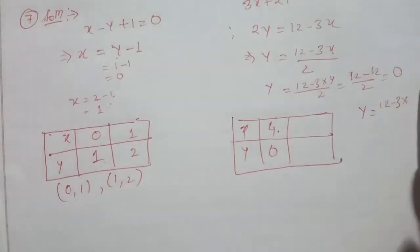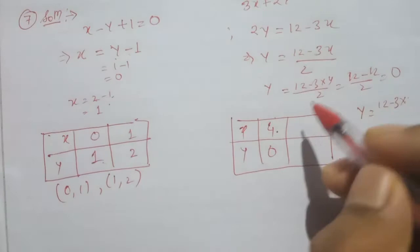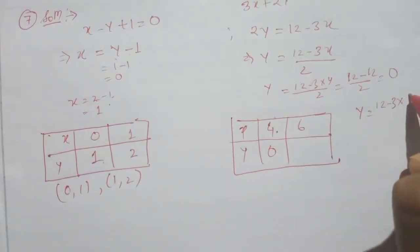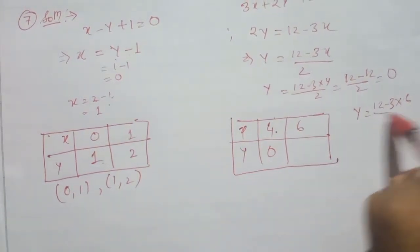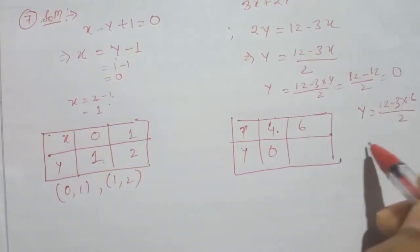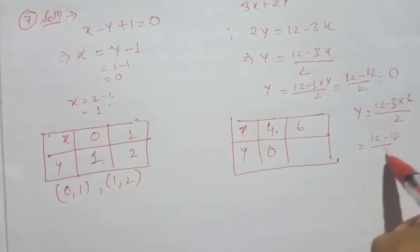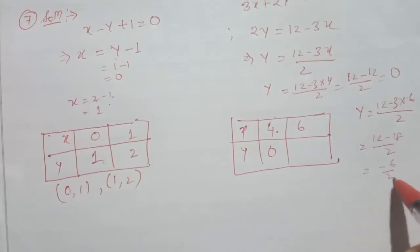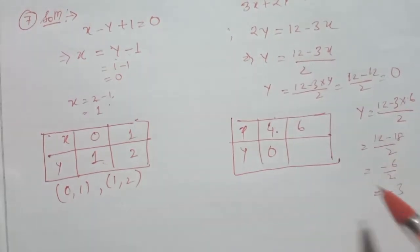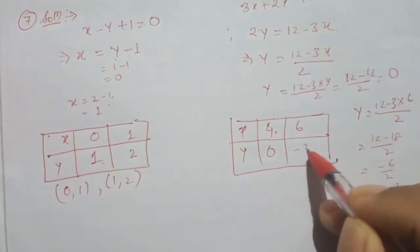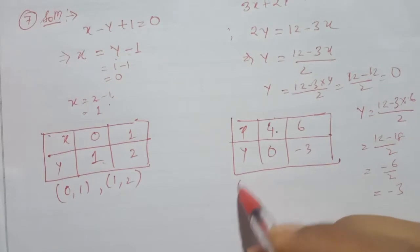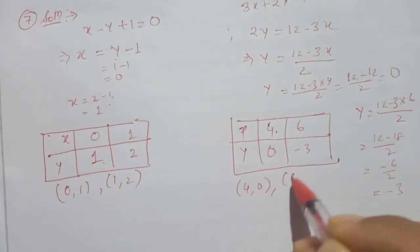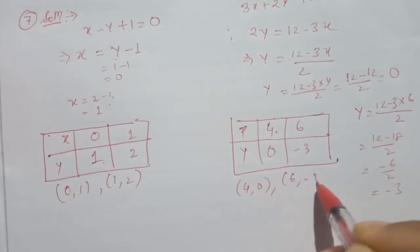This is 4 times x minus 1, which is 6. This means 2 is equal to 12 minus 18 by 2, which means 2 minus 6 by 2 is equal to minus 3. This is minus 3, and this is minus 6 by 3, then this is minus 2.